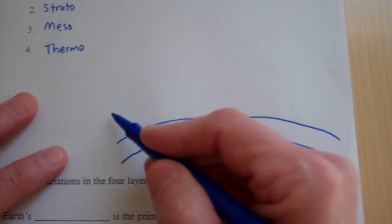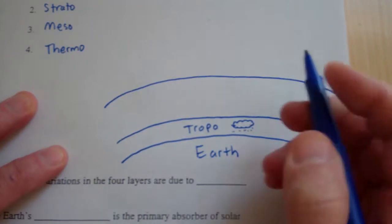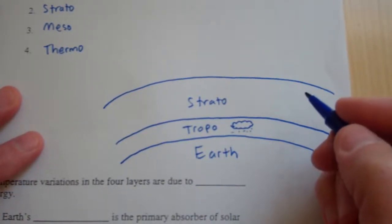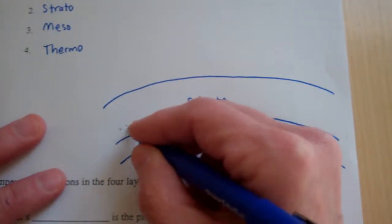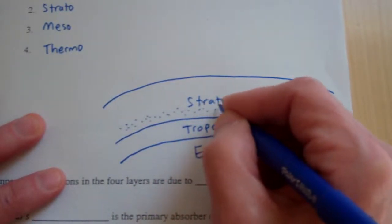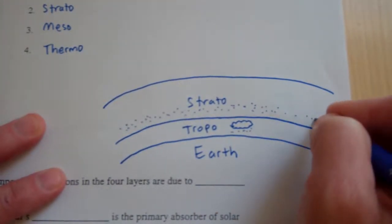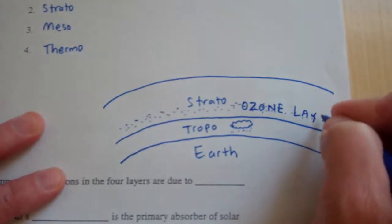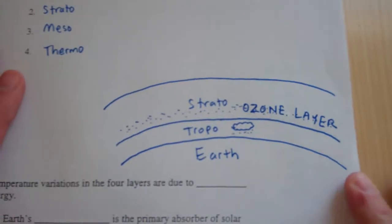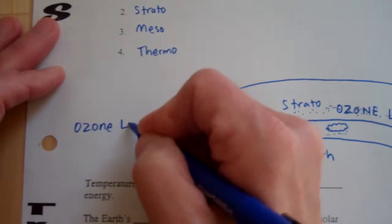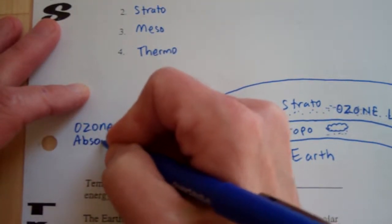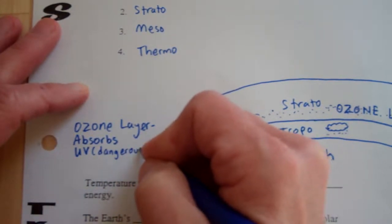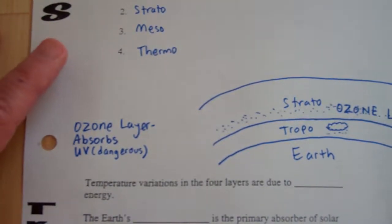The next layer up is a little bit thicker of a layer. It's the stratosphere. And the ozone layer is in this layer of our atmosphere. So within the stratosphere is the ozone layer. So I'm just going to kind of draw some dots to represent the ozone layer. And this ozone layer is super important to us because it absorbs ultraviolet radiation. So the ozone layer absorbs UV, which is dangerous, harmful. So this is a really good layer for us. The ozone layer protects us.